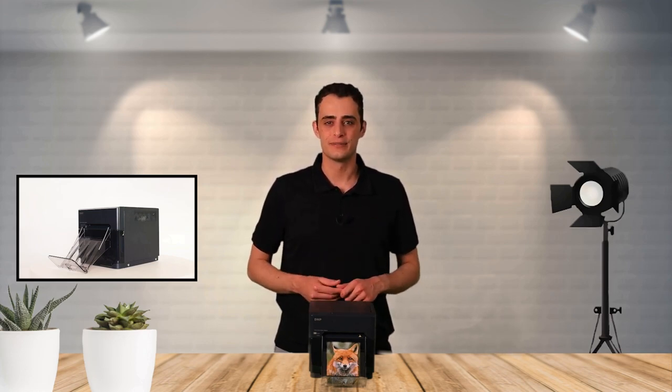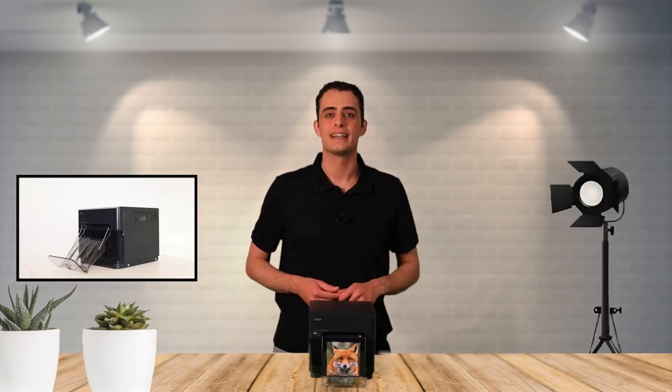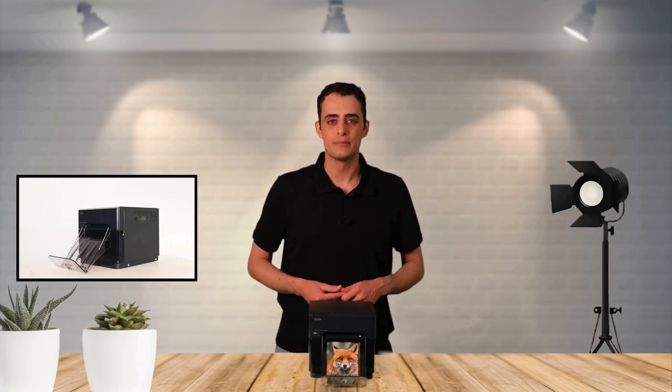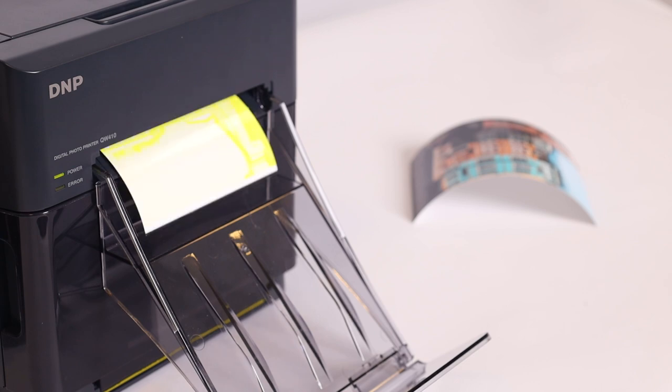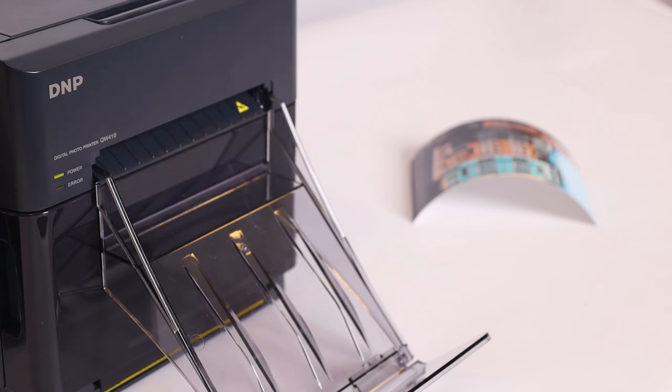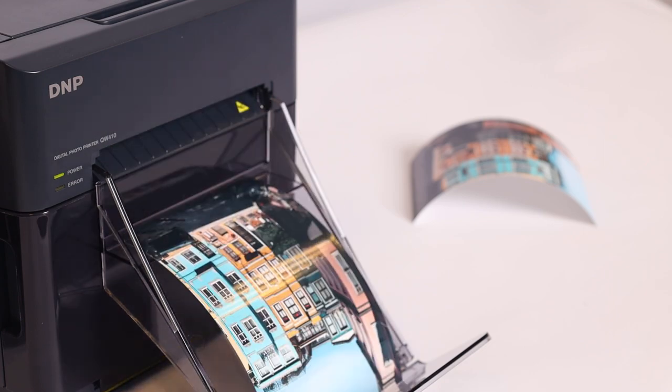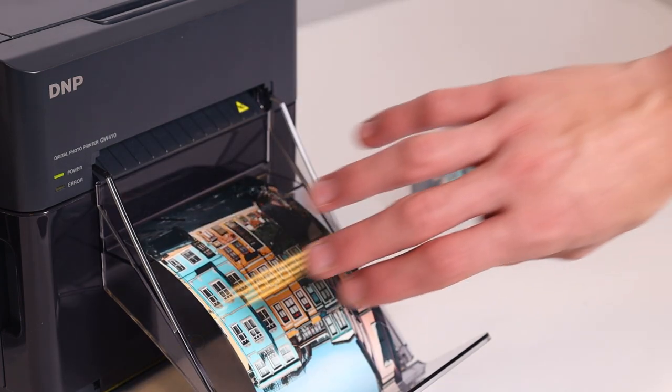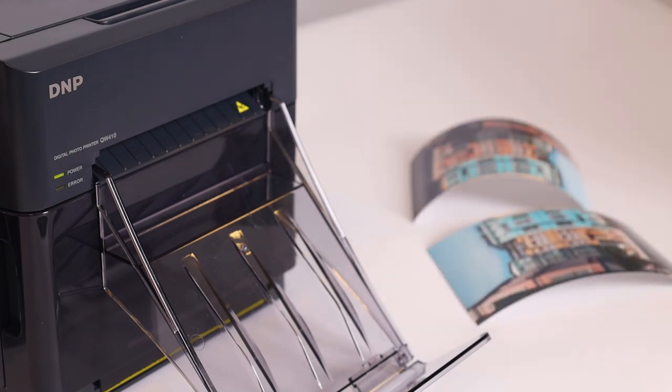Printing one 10x15 centimeter photo is already possible in 18 seconds. The printer has a special function that prevents paper from getting jammed. You activate it in the driver where photos emerge from the printer without being bent, and the QW410 is renowned for its prints of excellent quality.